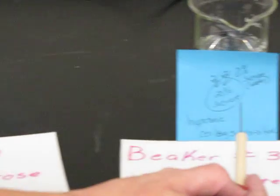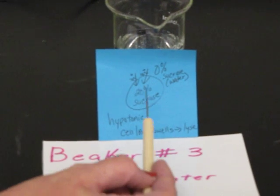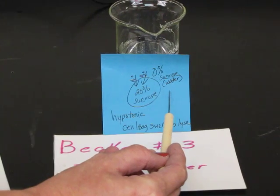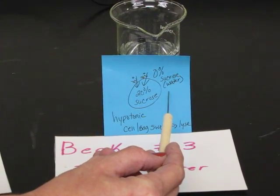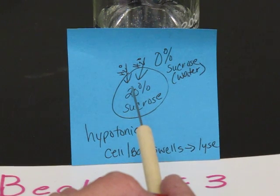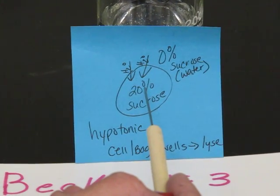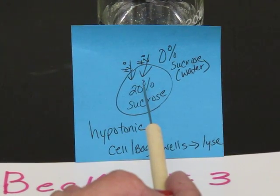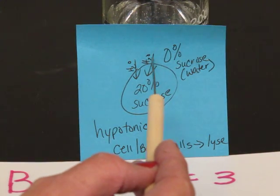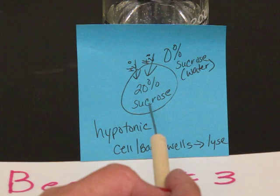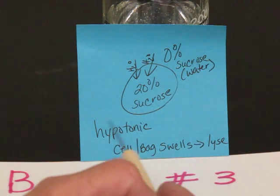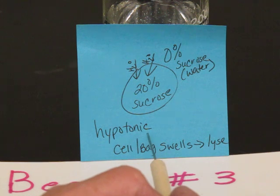In beaker 3, we have our 20 percent bag of sucrose and it is sitting in water or 0 percent sucrose. Again, water will move to the higher concentration to dilute it, trying to obtain homeostasis. 20 percent is higher than 0 percent. Water will enter the cell causing the cell to swell and eventually lyse or rupture. We would call this a hypotonic solution.